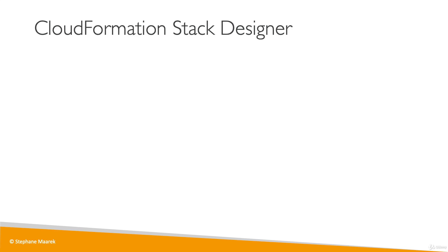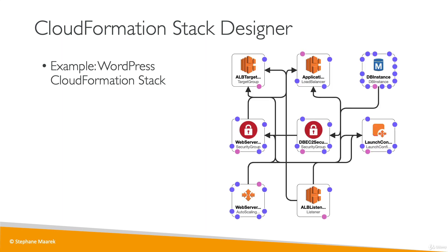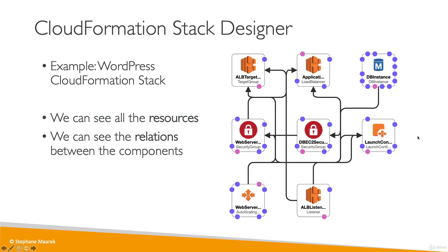You can visualize CloudFormation stacks to see a diagram of what is created. I took an online WordPress CloudFormation stack and went into the designer to see what it gives. It produced this diagram showing the different components created — security groups, an ALB listener, a launch configuration, a load balancer, a database instance for RDS, and an auto-scaling group. CloudFormation is smart enough to create this diagram and also map all the relationships between components, which is very handy.